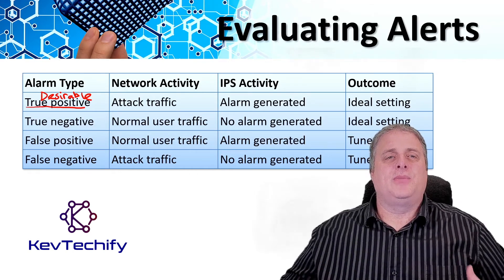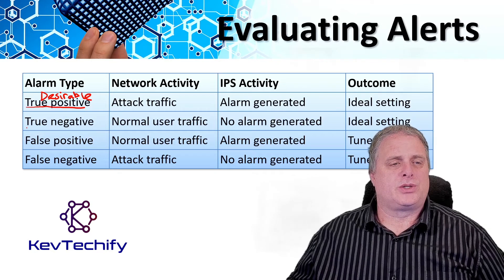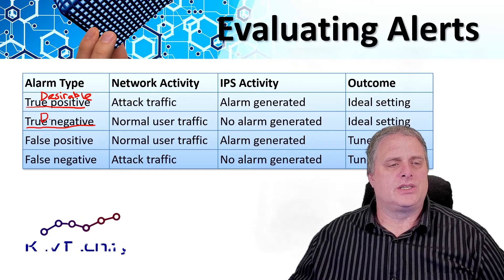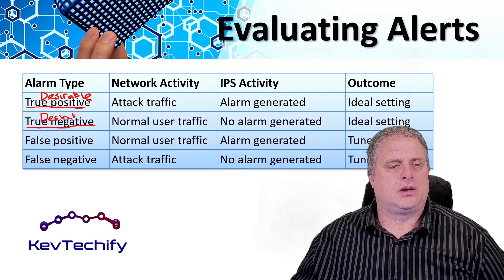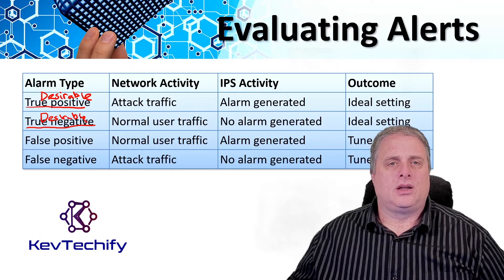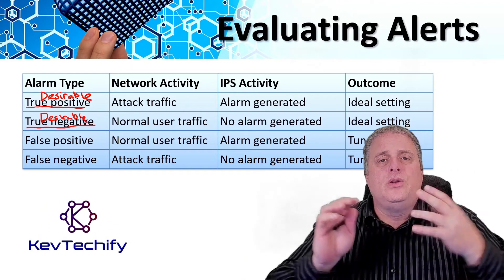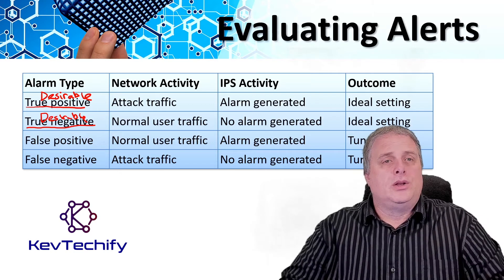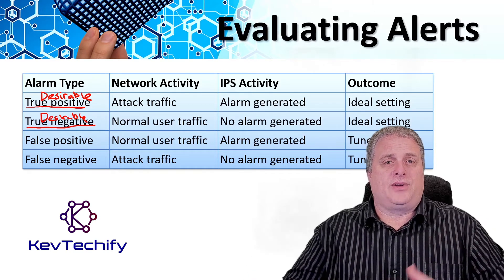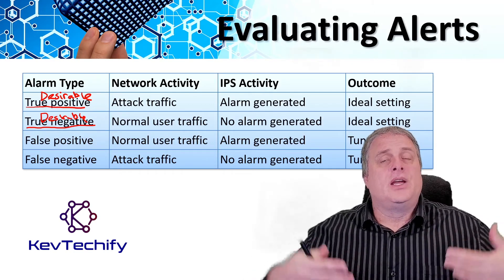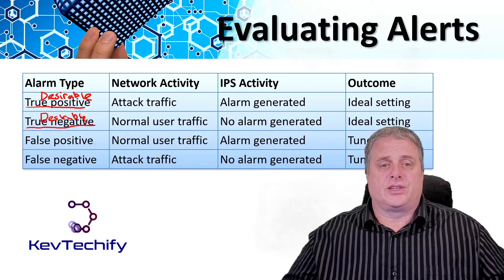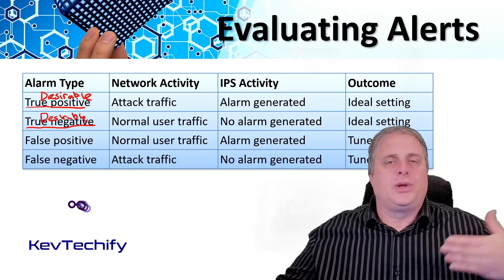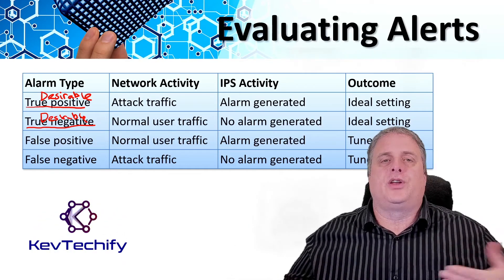The second method to evaluate traffic is a true negative, which is also desirable. This is used when normal network traffic does not generate an alarm. No alerts are issued because the traffic passing through the system is clear of threats — this is just normal people doing normal things on your network.